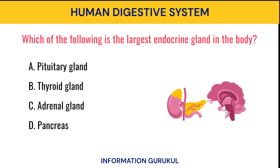Which of the following is the largest endocrine gland in the body? Thyroid gland.